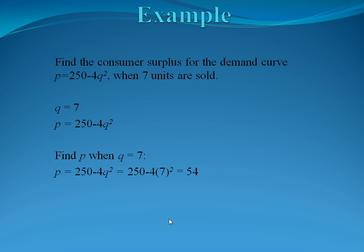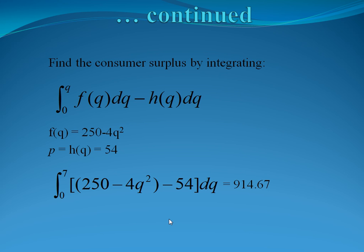So that's the curve that we want to use, that 54, as our horizontal line. So we're going to do demand curve minus 54, and we're going to integrate starting at 0 and going up to 7. So we take our general equation, and we integrate from 0 to 7. We take our demand curve, 250 - 4Q², minus the price, which we calculated to be 54. Again, you'll do this part on your calculator, and when you plug that all in, we get a consumer surplus of 914.67.